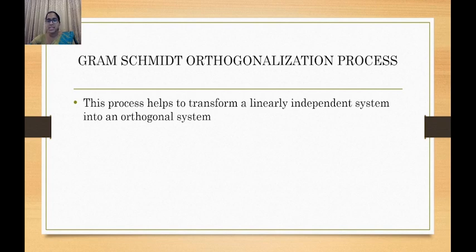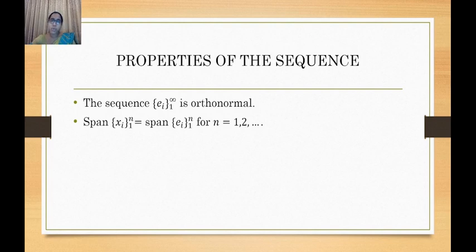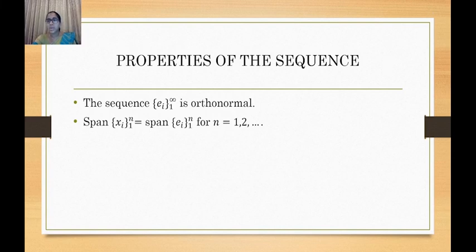Next, we will discuss two properties of the sequence obtained by the Gram-Schmidt orthogonalization process. The first property is that the sequence {e_i} is orthonormal — not only orthogonal, but orthonormal. The second property is that the span of {x_i} for i from 1 to n equals the span of {e_i} for i from 1 to n.